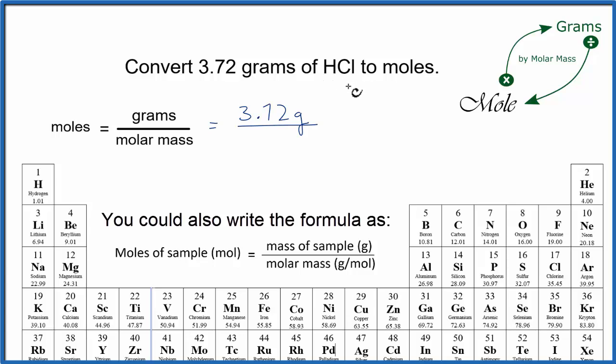and we'll divide that by the molar mass of HCl. So I look up H and Cl on the periodic table, add them together, I get 36.46, and that's grams per mole. My grams, those will cancel out, and I'll be left with moles, and when I do the math, I get 0.10 moles.